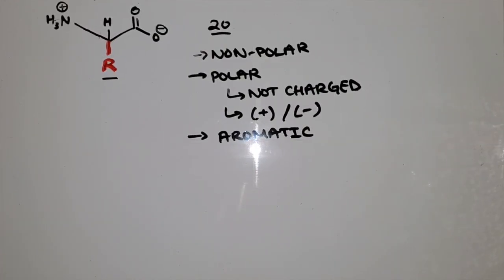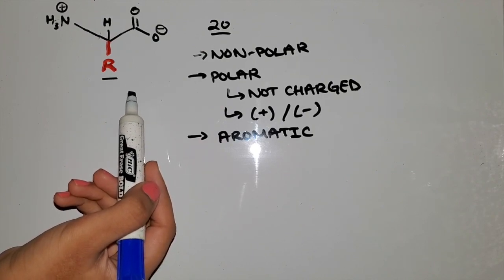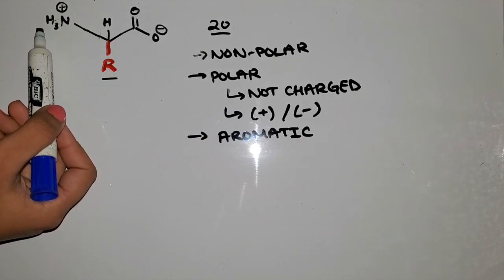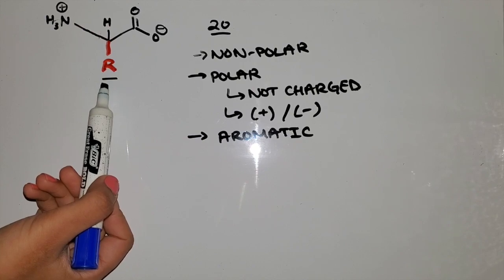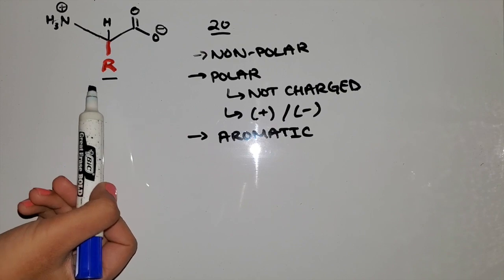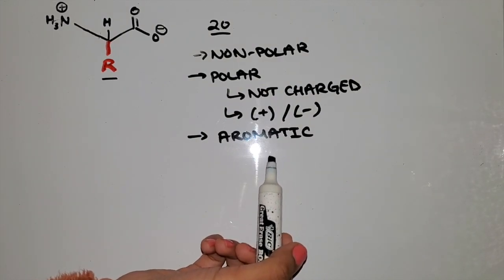Now we know the difference between non-polar and polar. But we need to understand how polar molecules could be charged. Similar to how we see here in our zwitterion, at certain pHs functional groups could get deprotonated or protonated, resulting in an extra charge. So when the R group at a certain pH loses or gains a hydrogen, it becomes charged.